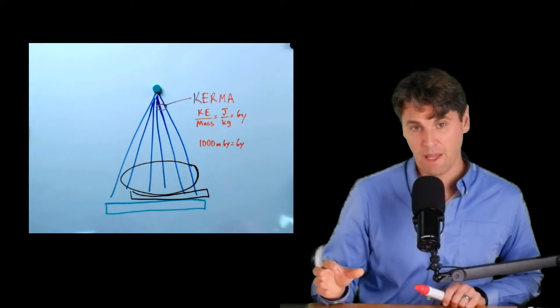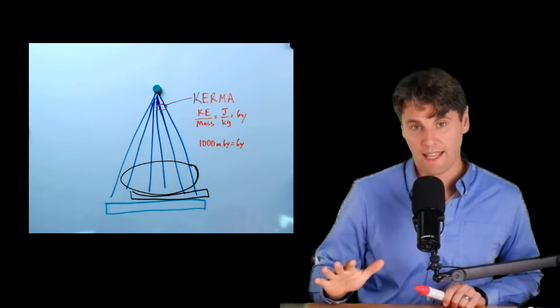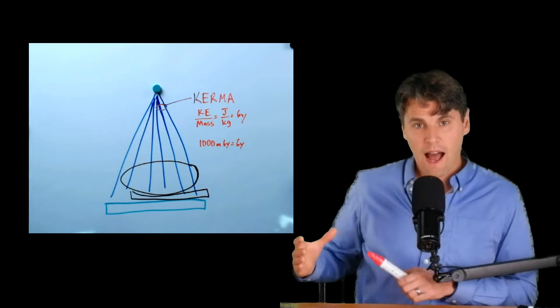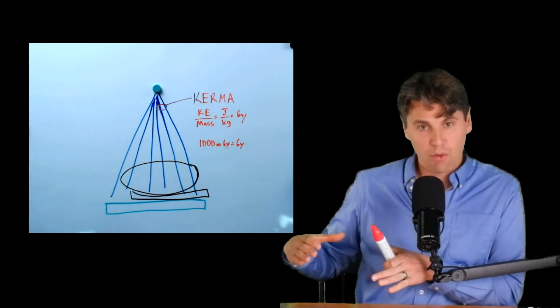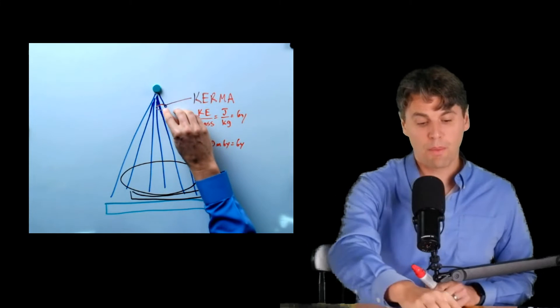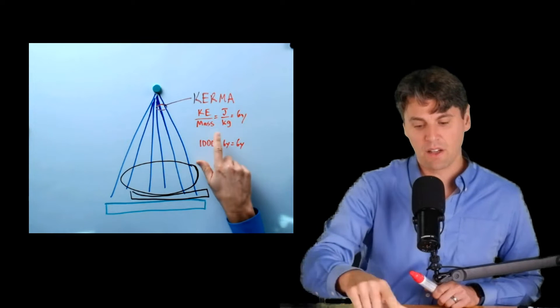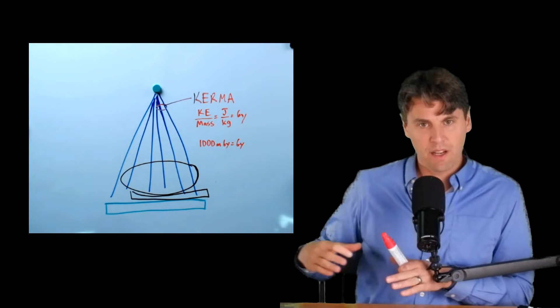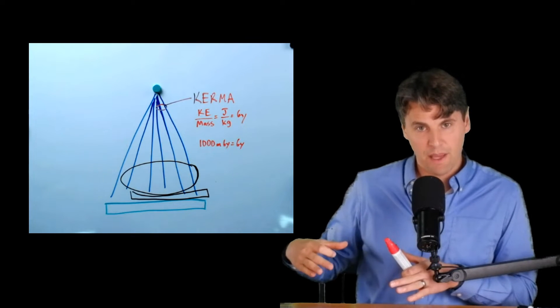For simplicity in fluoroscopy, a lot of times we are just tracking the Kerma, and also specifically how much area is irradiated, because the Kerma measures how much energy is going to be released per unit mass. And then we also want to take into account how big of an area is irradiated on the patient.